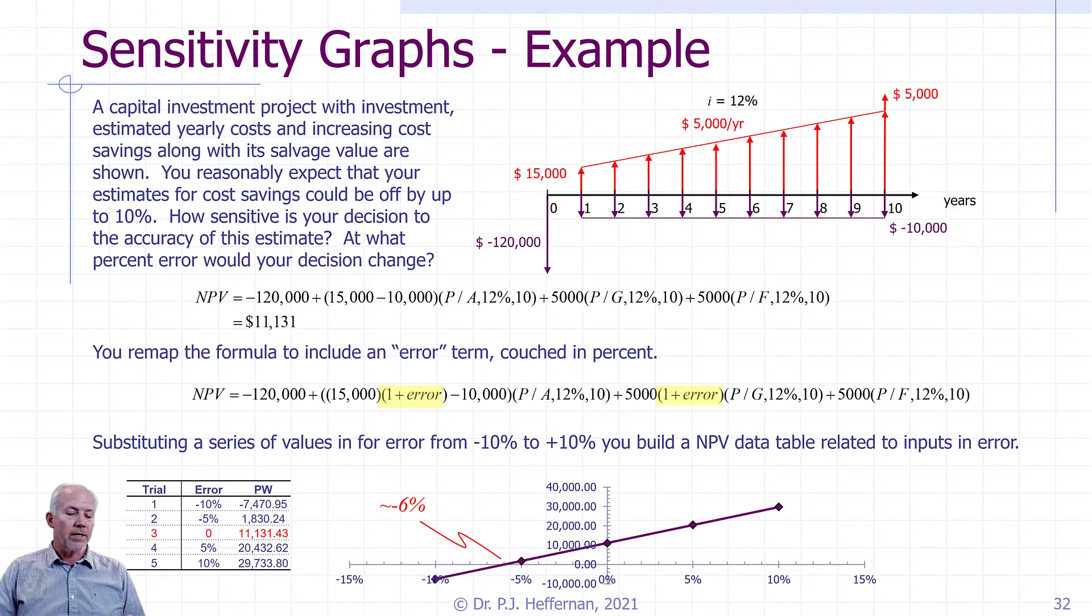Now being a cost loser, or a losing project as compared to a winning project. This is a sensitivity graph. This shows it for one particular parameter or estimate, which in this case was our estimate of cost savings.